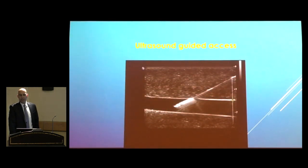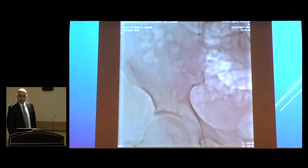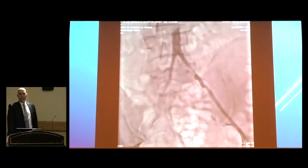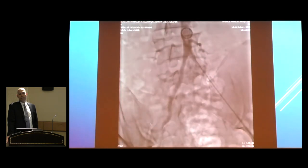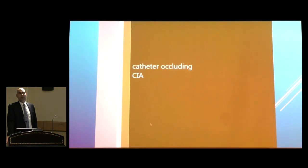We started the procedure with ultrasound-guided access. I do believe ultrasound-guided access decreases the risk of groin hematoma, pseudoaneurysm, and other access problems. I put a short 6 French sheath in the left groin at the beginning, and crossed that left common iliac. Here you can see the left common iliac near-occlusion — since it's a near-occlusion, once the pigtail was placed (a 5 French pigtail), you can't really see the external iliac or the common femoral.